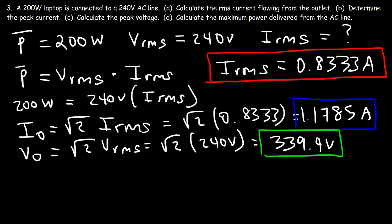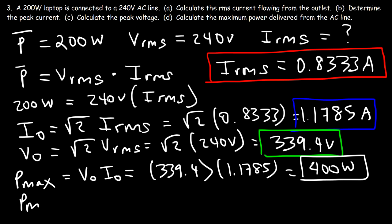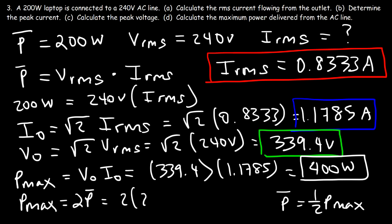For part D, calculate the maximum power delivered from the AC line. The maximum power equals the peak voltage times the peak current, so that's 339.4 multiplied by 1.1785, giving a maximum power of approximately 400 watts. It's important to understand that the maximum power is twice the value of the average power, so we could have simply done 2 times 200 watts to get 400 watts.